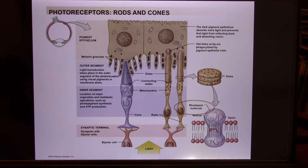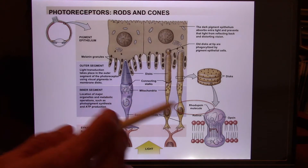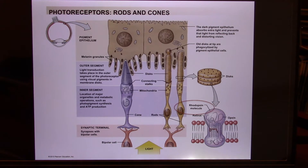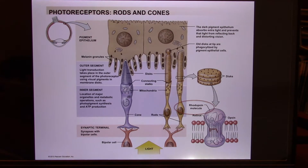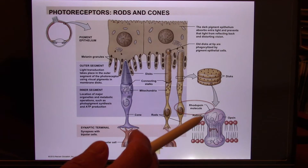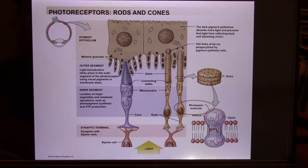We have three different kinds of cones, each one sensitive to different wavelengths, and we only have one kind of rods, so rods use rhodopsin. All the pigments can only be activated by visible light — those 350 nanometer to 700 nanometer wavelengths. That's why we call them visible light. Other electromagnetic waves won't be able to trigger signal transduction, so we don't see that light.